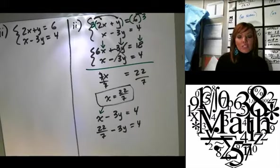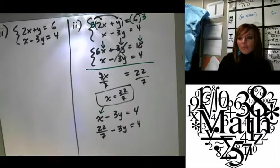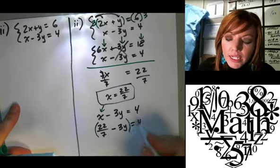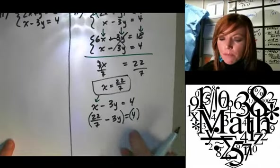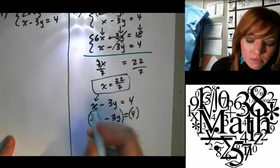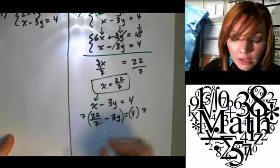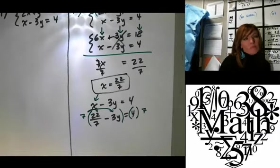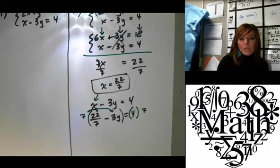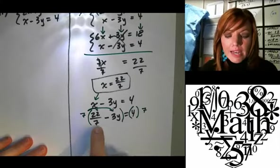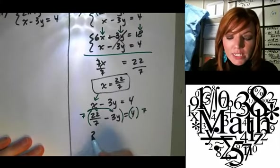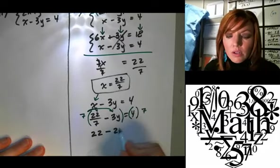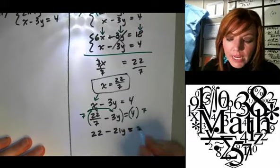Okay. So we get 22 over 7 minus 3y equals 4. Here's how I like to handle these problems since I'm not a huge fan of fractions. If I multiply everything in this equation by the denominator, so everything by 7, or 7 over 1, same thing, then I get rid of the fraction. You guys agree with that? Okay. So then, right here, the 7s would cancel out. I would be left with 22 minus, what's 7 times negative 3y? Good. And then 7 times 4 is 28.